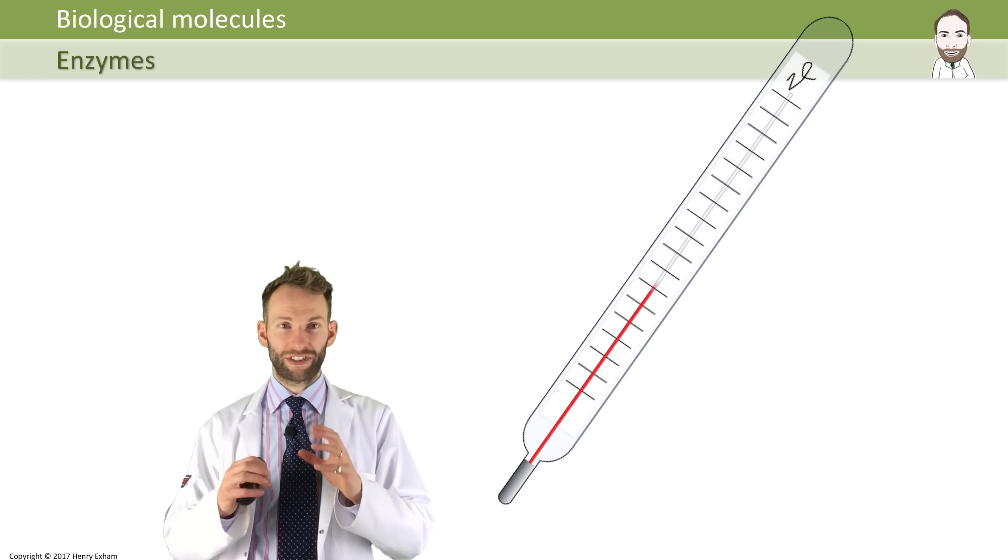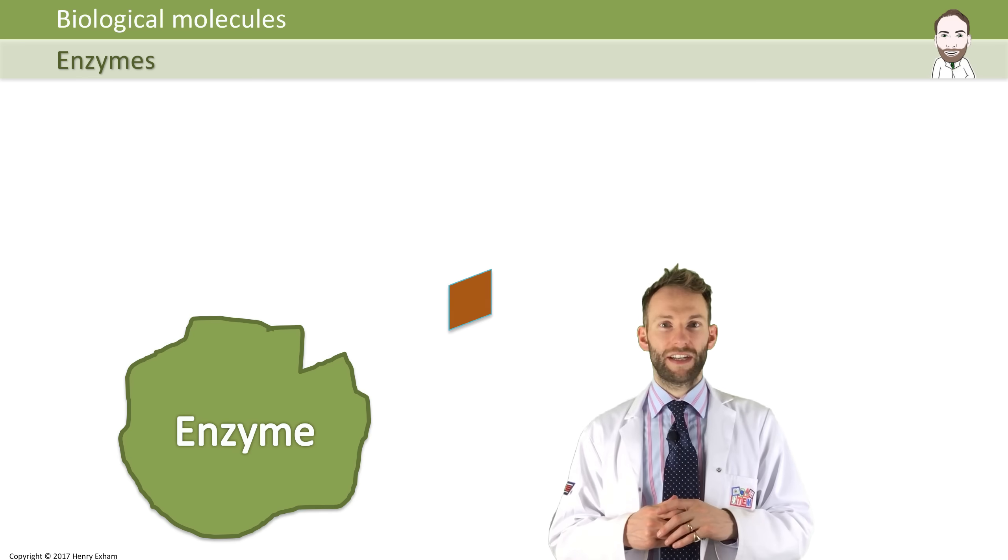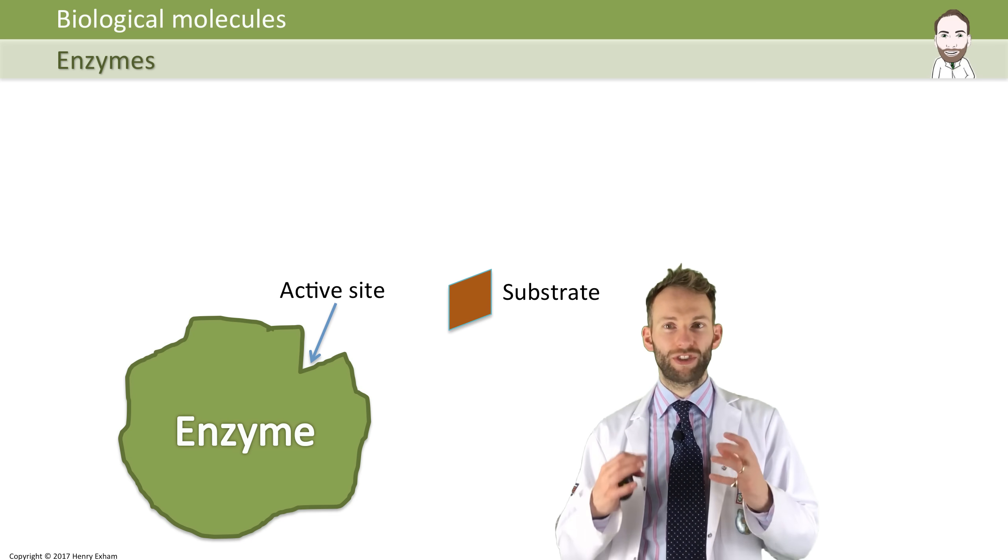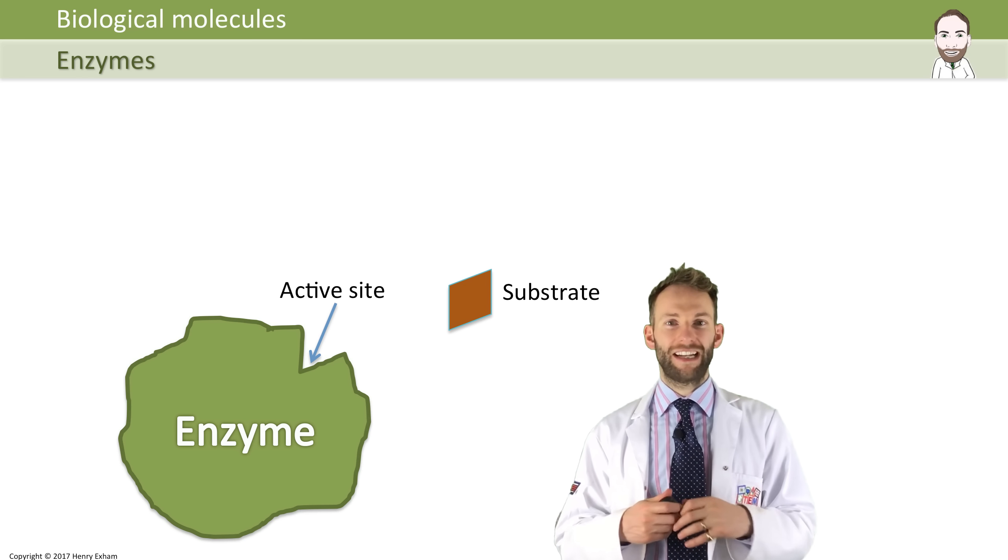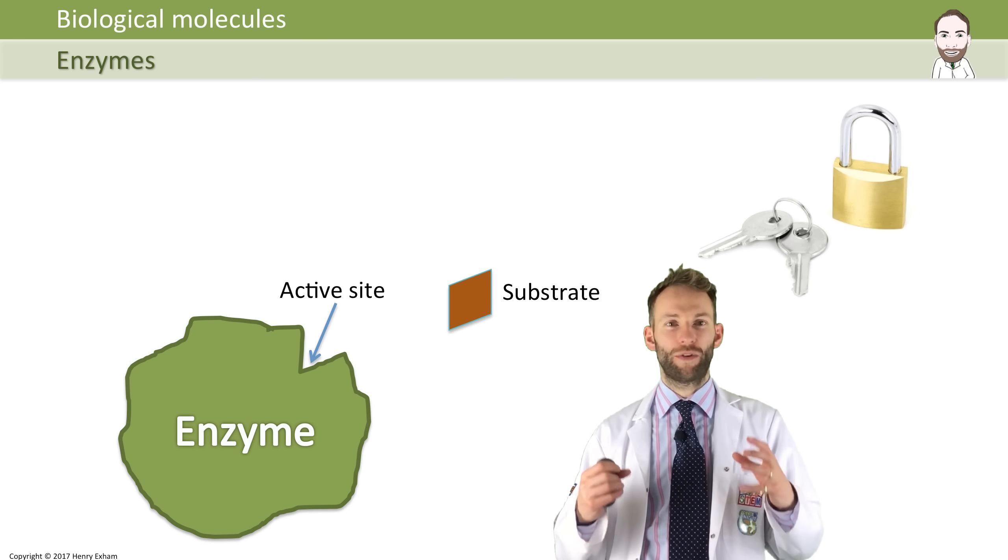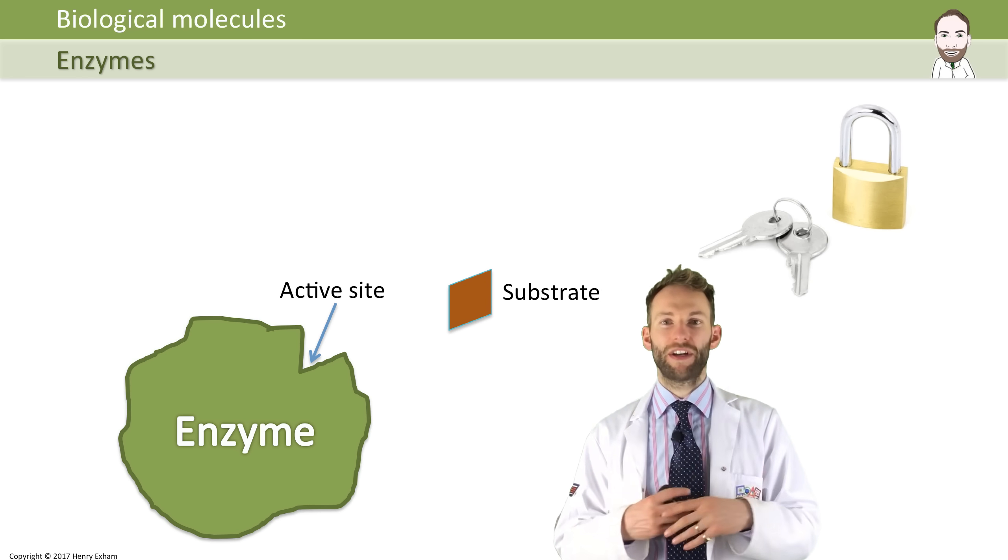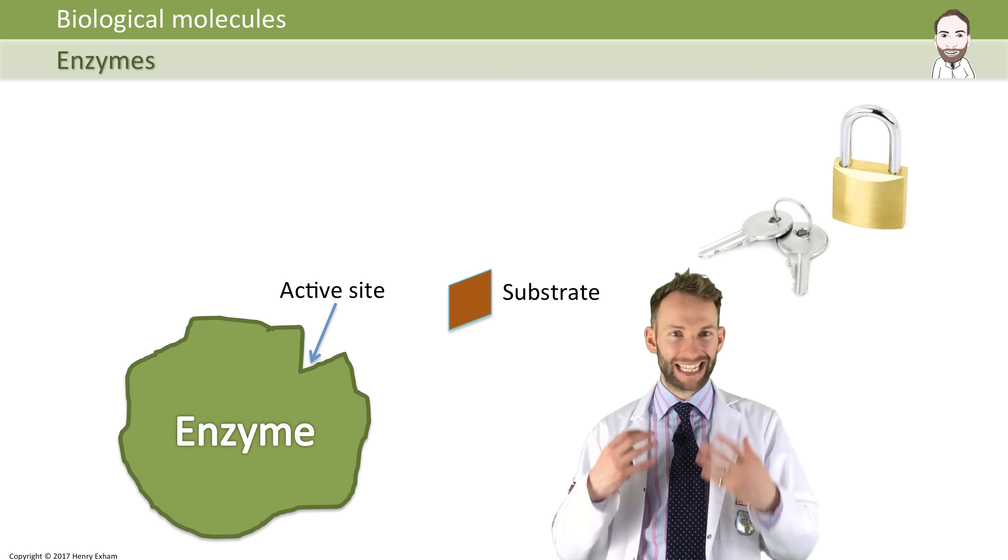Each enzyme in its structure has something called an active site. The molecule that it wants to help change is called the substrate, and the substrate and the active site need to fit together like a lock and a key. They will match in perfect shape.